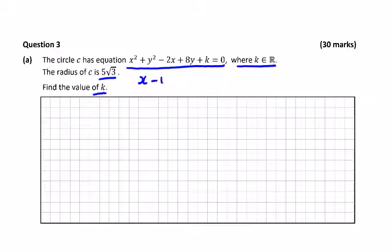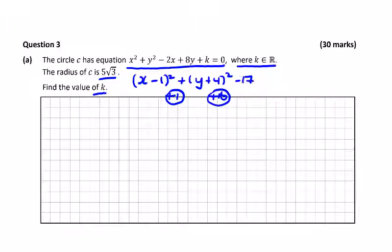So you probably start by just rearranging it as x minus 1 squared, plus y plus 4 squared. We've brought in a 1 in this bracket that we don't want, we have a 16 in here that we don't want, and so we've brought in 17, so we'd have to take away 17 to balance it out.